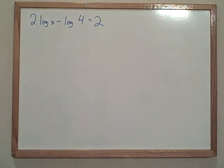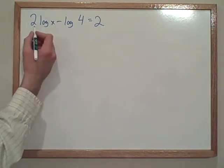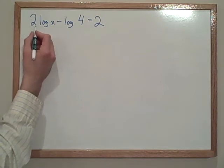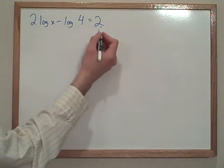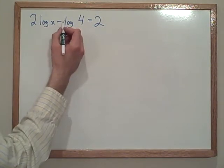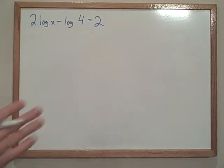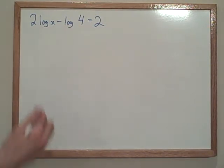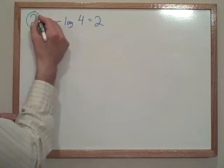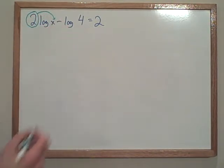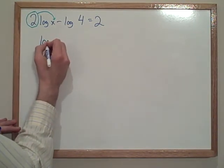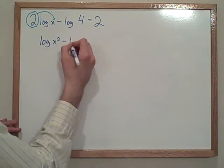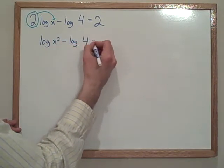Okay, one of the first things we notice about this problem, this goes back to simplifying logarithms. We have a coefficient. We have a couple options here. We could divide by two, which works great here and here, but it's going to turn this understood one into a one-half, and it's going to slightly complicate our life. Let's not go there. Instead, we're going to take this two, and we're going to move it up, and it's going to become an exponent. And when it becomes an exponent, the problem begins to look like this. So we now have log of x squared minus log of four equals two.